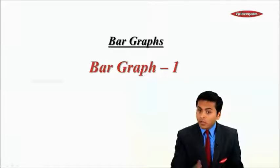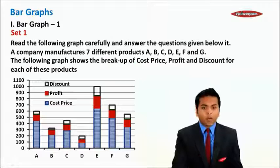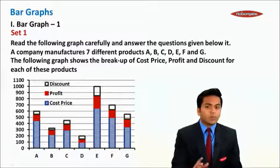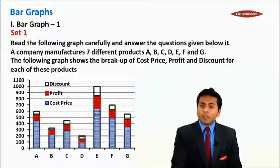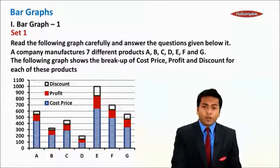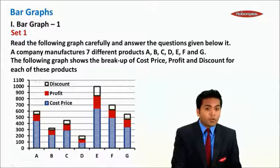Hello everyone, let's study bar graph part 1. Read the following graph carefully and answer the question given below. A company manufactures seven different products A to G. The following graph shows the breakup of cost price, profit, and discount for each of these products.